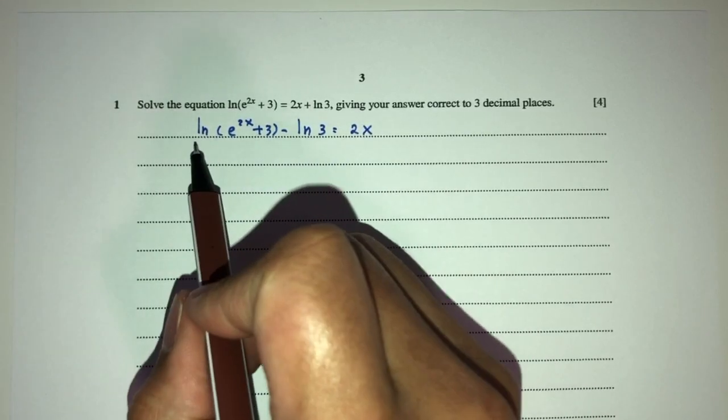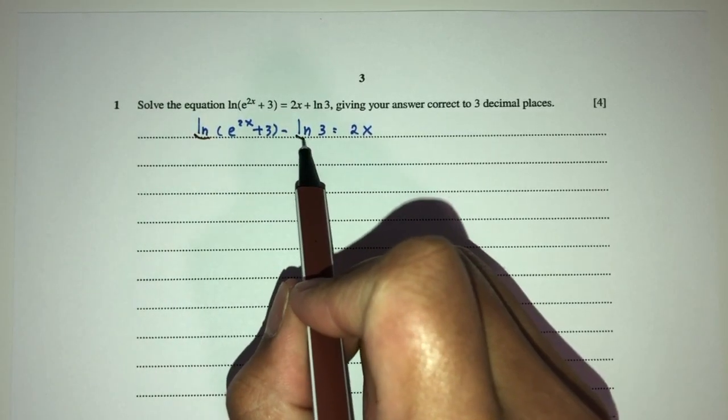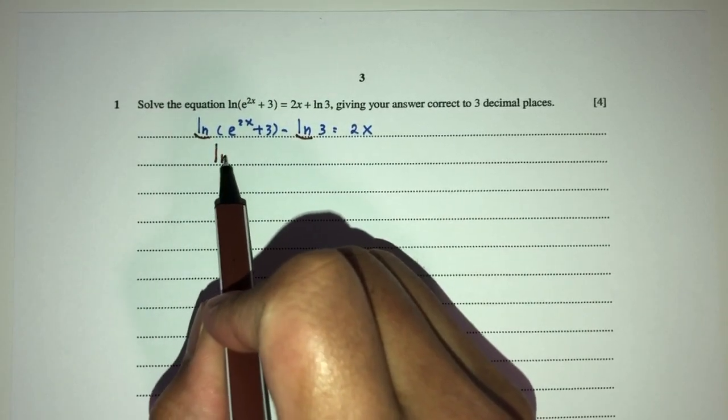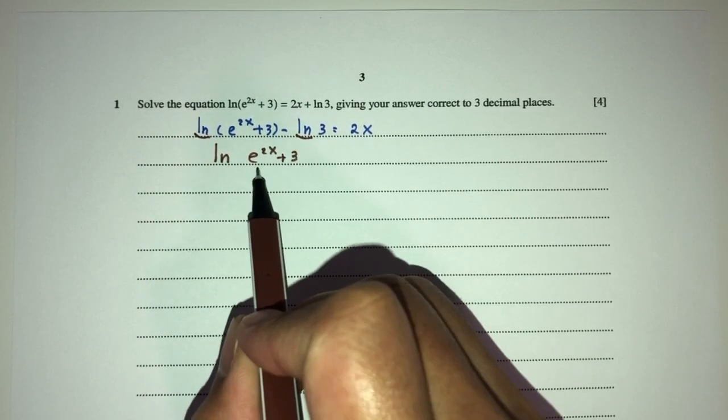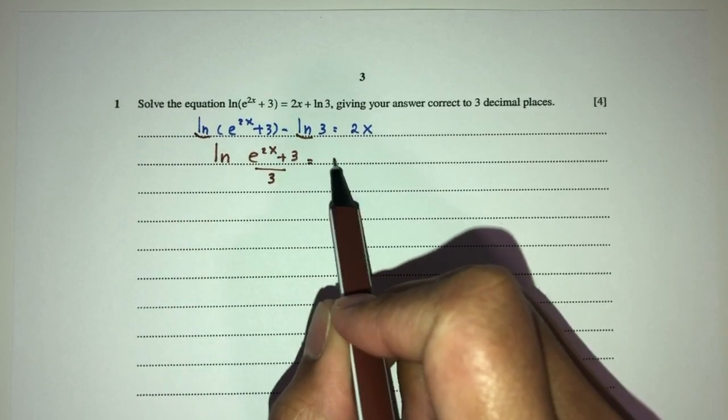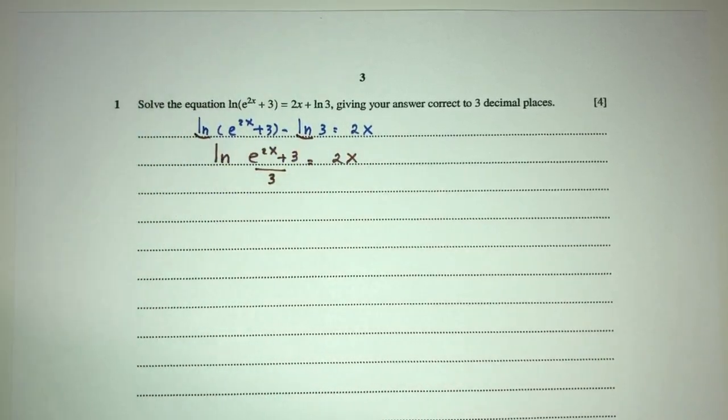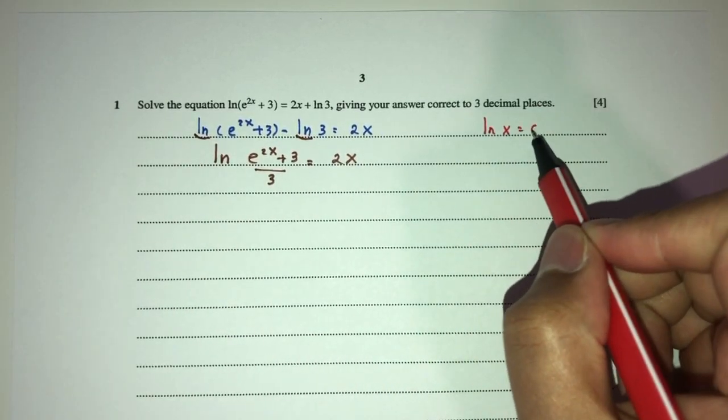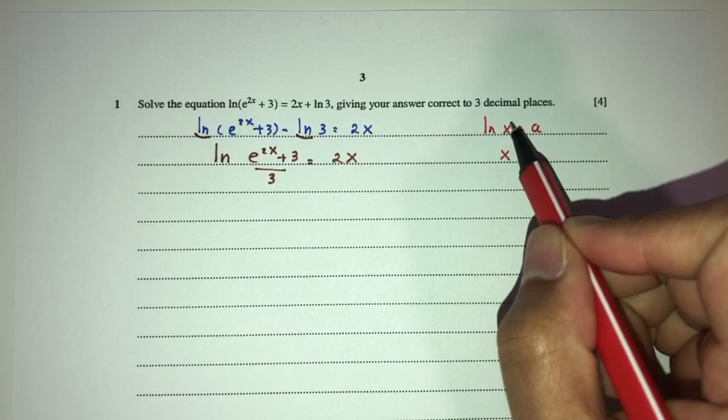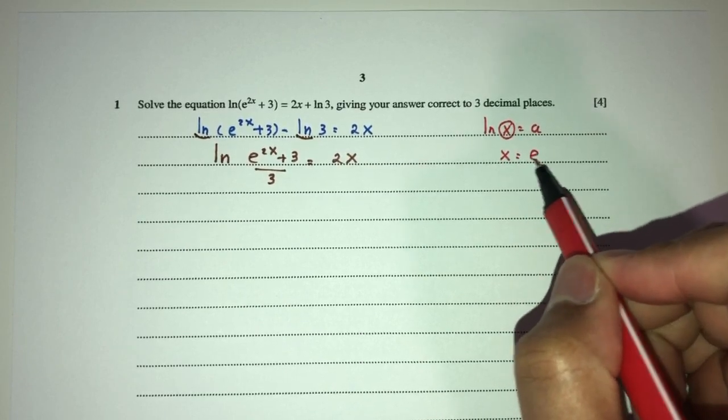Now, because these are the same, the ln is the same as here, we can combine them together. We'll have this. Now we can make exponential 2x plus 3 divided by 3 is equal to 2x. Now from here we should know this property. For example, when you have ln of x equal to A, to find x, which is the inside value, that will be exponential of A.